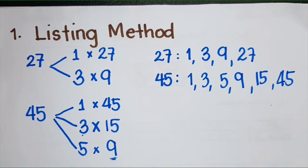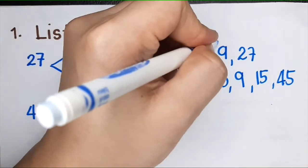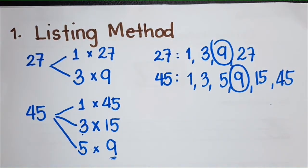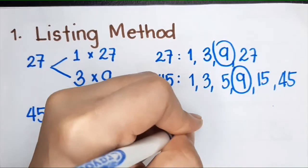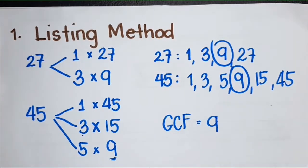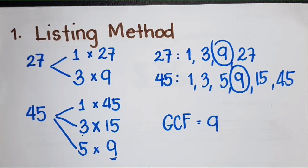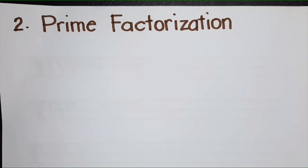We were able to list down all the factors of 27 and 45. Now we're going to look for the greatest common factor. That's the largest number that can divide both 27 and 45, so the GCF equals 9. That's how you use the listing method. Now we move on to the second method, prime factorization. We're going to find the GCF of 27 and 45 using prime factorization.